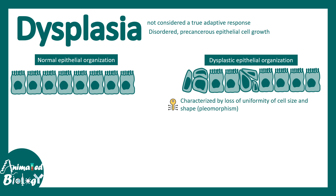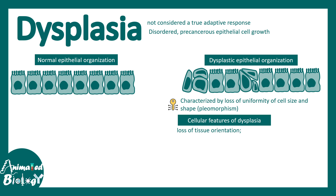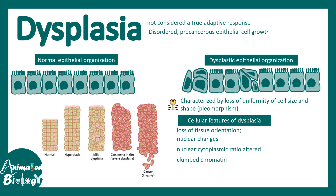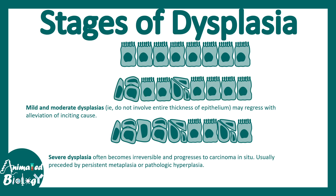Dysplasia is characterized by loss of uniformity in cell type within a tissue. Cellular features include loss of tissue orientation, nuclear changes, altered nuclear-to-cytoplasmic ratio, and clumped chromatin. It often has different stages.